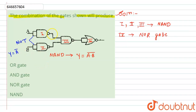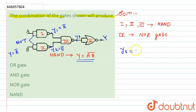Let the output of the first gate be Y1, the second gate be Y2, the third gate be Y3, and the fourth gate be Y. Since the first gate works as a NOT gate, Y1 = Ā, and Y2 = B̄. The third gate acts as a NAND gate, so Y3 = (Y1·Y2)̄ = (Ā·B̄)̄.